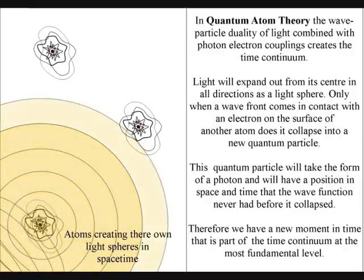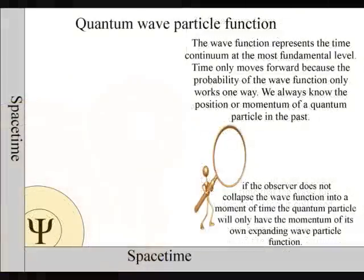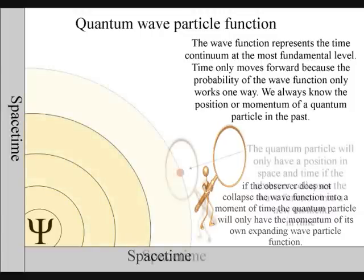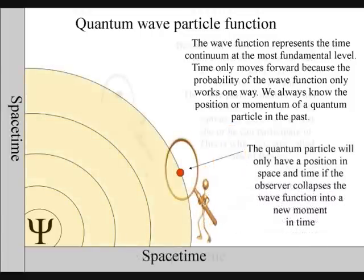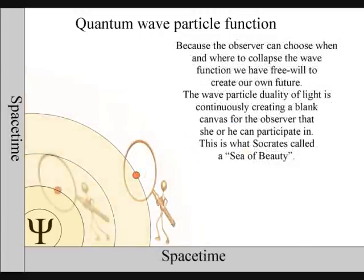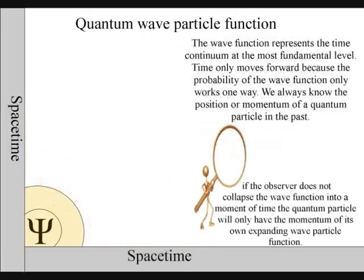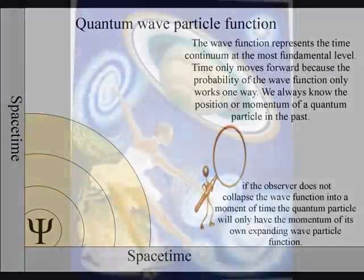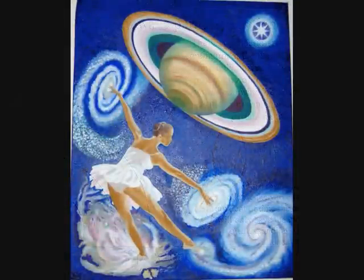Every object in our universe will create its own time and space by collapsing the light waves of electromagnetic radiation into new quantum particles that will have their own position in space and time — a position that the wave function never had before the collapse. It is because the observer can choose when and where to collapse a wave function that we have free will to create our own future.